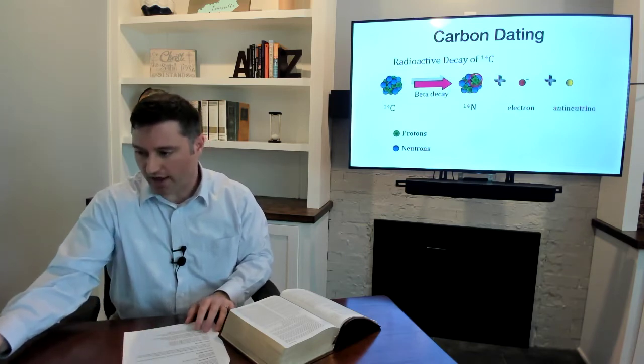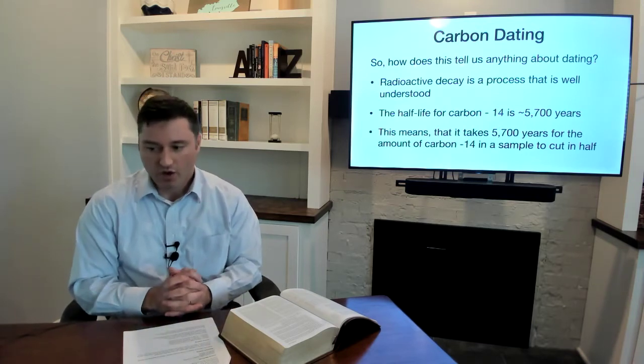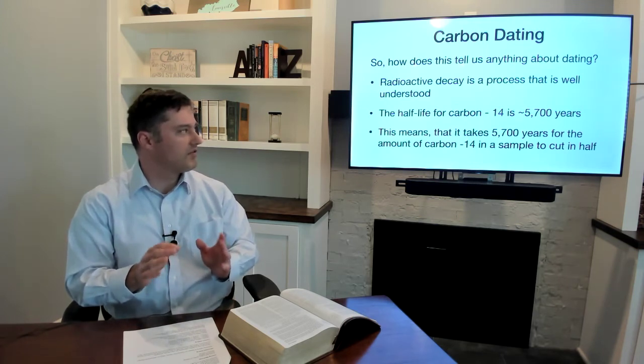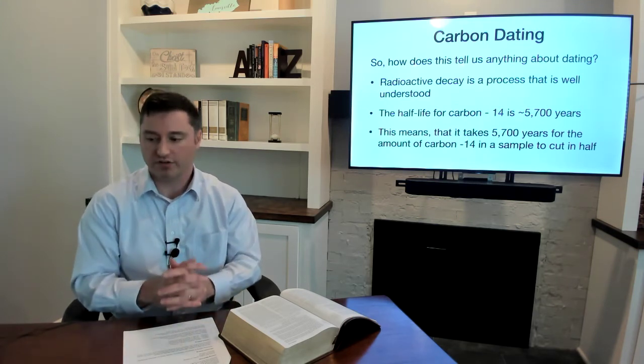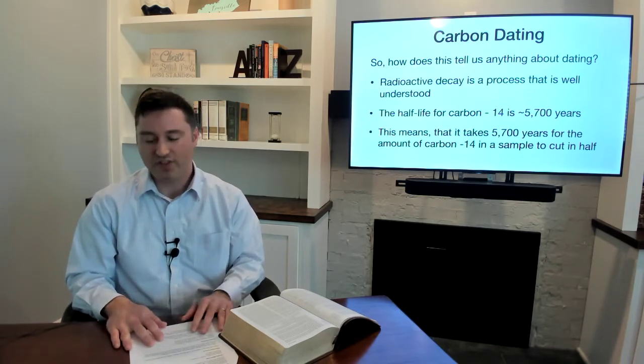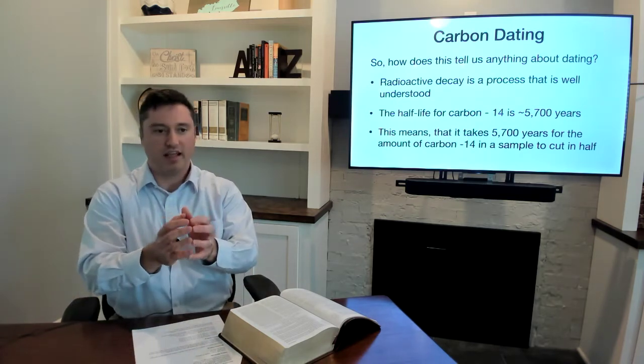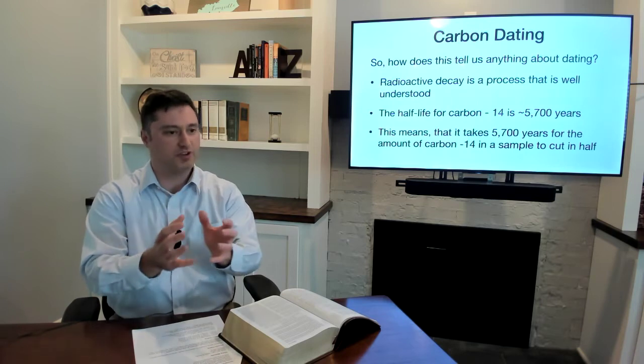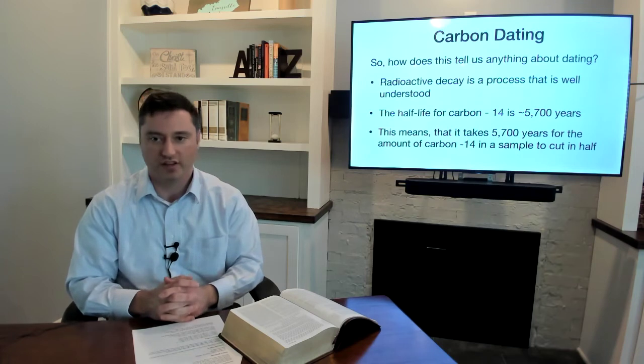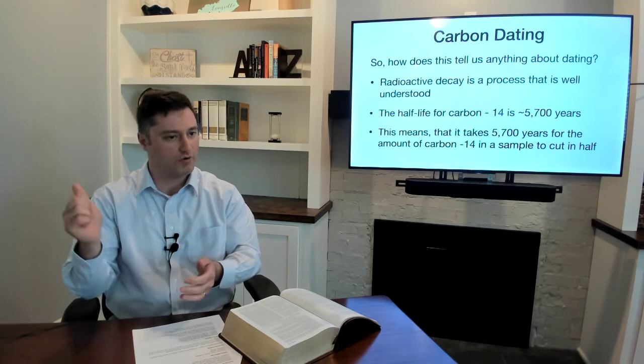So, all of that to say, how does this tell us anything about dating? Well, radioactive decay, again, is a process that's well understood. The half-life for carbon-14 is about 5,700 years. Now, what's a half-life? I'm using another scientific term here. What that means is, if I had a certain amount of carbon-14, from a statistical perspective, we'd expect half of it to be gone in 5,700 years. So it takes 5,700 years for that amount of carbon-14 to go away.